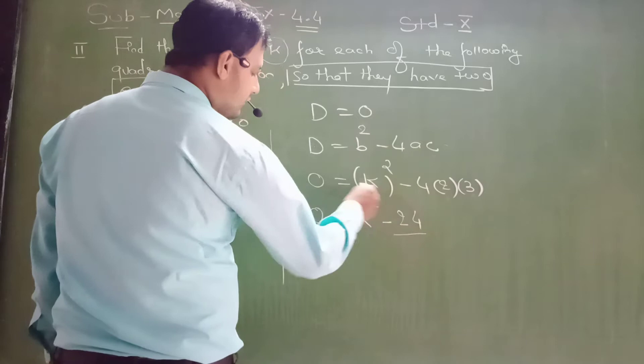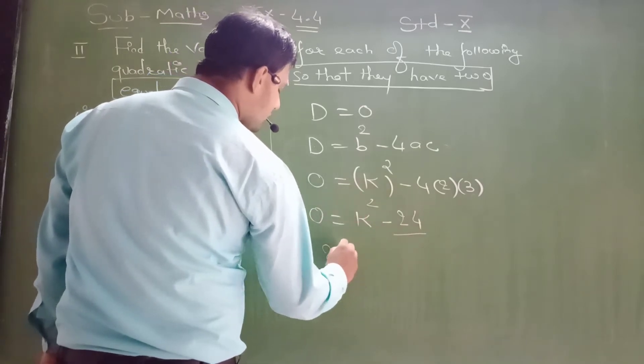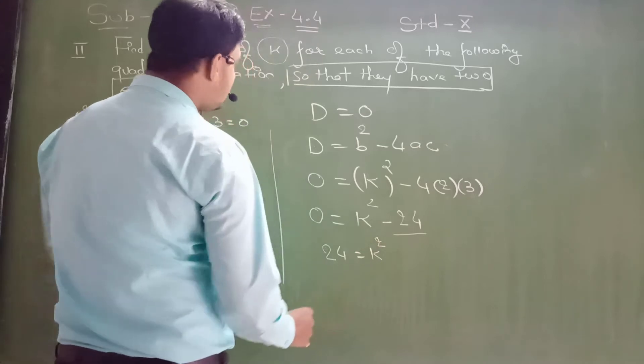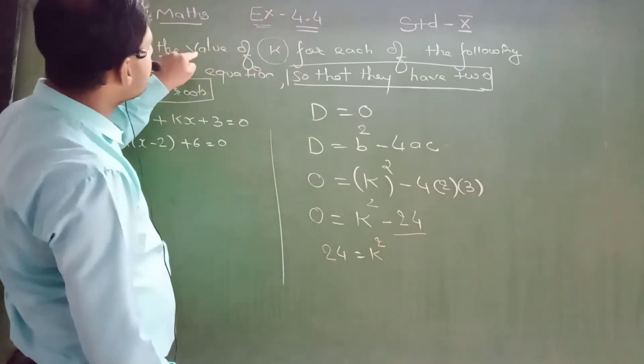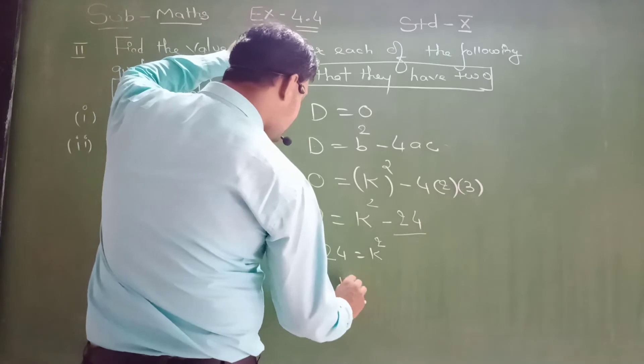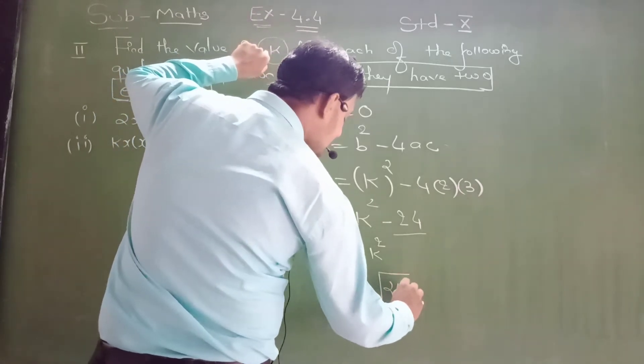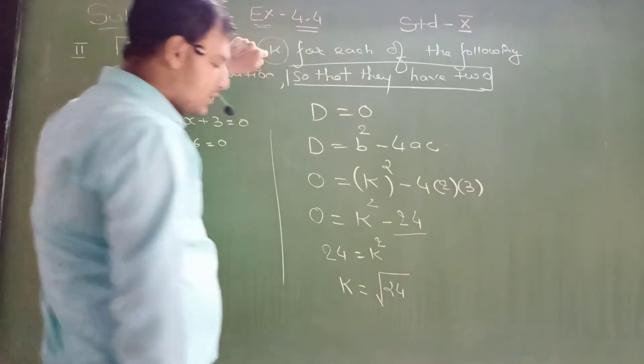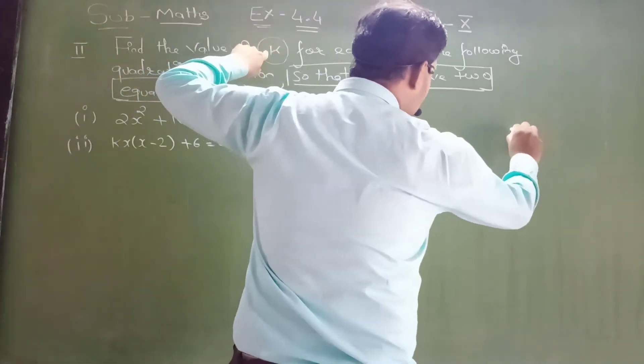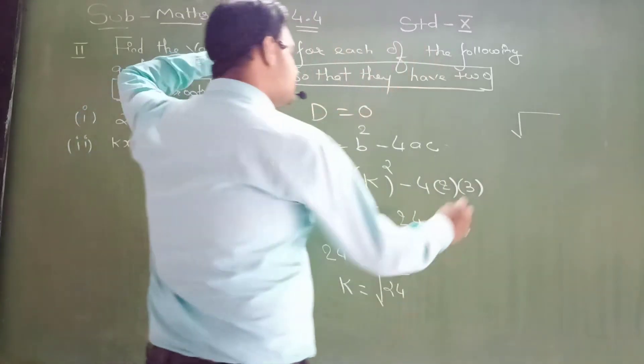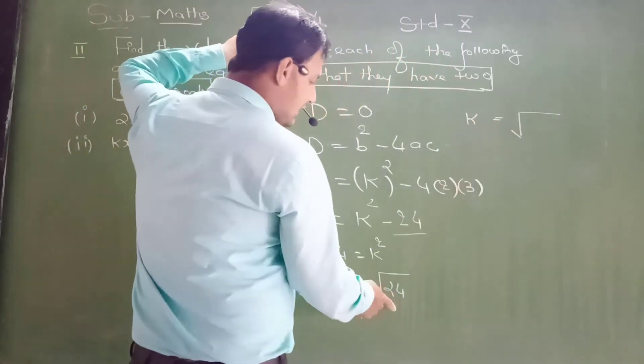Negative 24 comes to this side, so positive 24 equals k². Dear students, read the question: find the value of k. You need only k, it means remove the square, so here will be the square root.